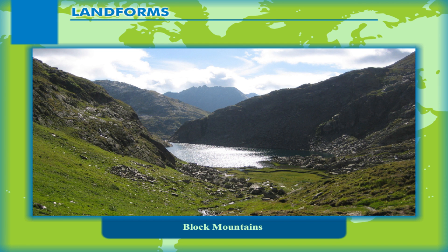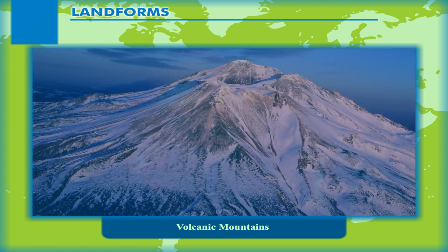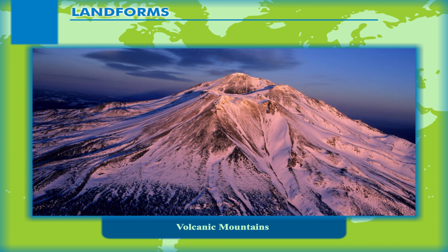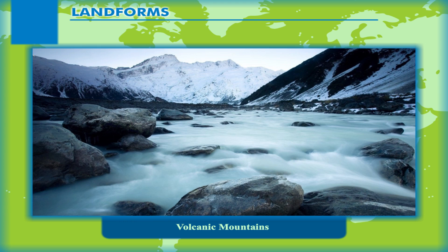This form of landscape can be seen in Rhine Valley in Europe. Volcanic Mountains: whenever there is an eruption of a volcano, the lava comes out and spreads around the volcanic pipe. With the passage of time, this lava solidifies and gives rise to volcanic mountains. Mount Kilimanjaro in Africa and Mount Fujiyama in Japan are examples of such mountains.